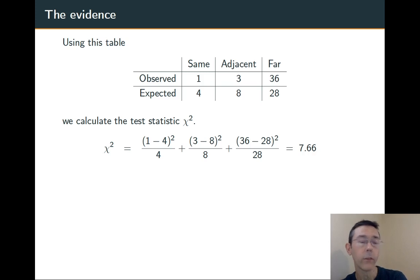We can compute a chi-squared statistic with this. The actual minus the expected squared over the expected. We do that 3 times, we add it up, and we get a chi-squared test statistic of 7.66.